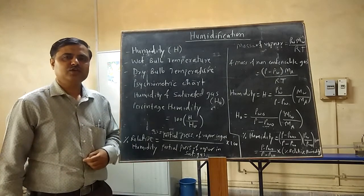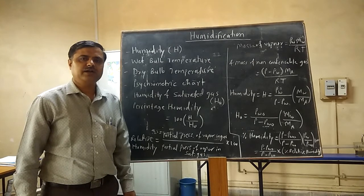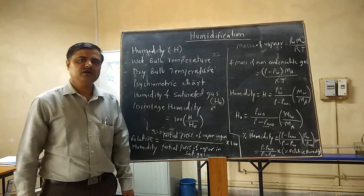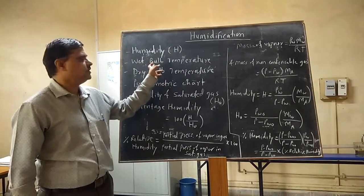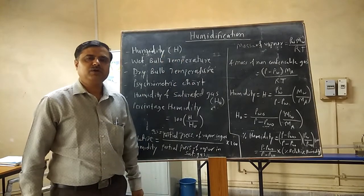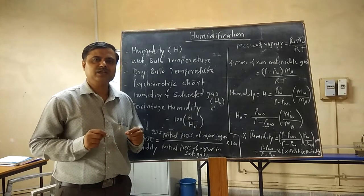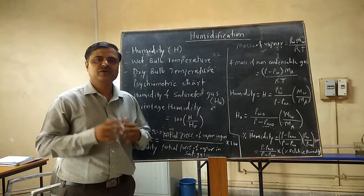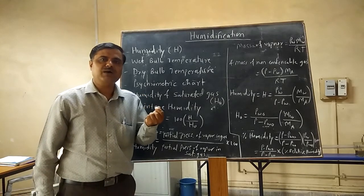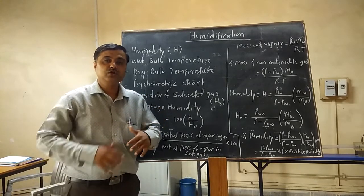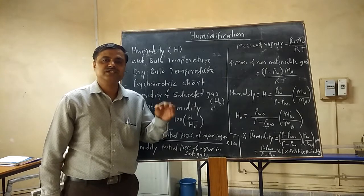How do we measure humidity? We have to measure the wet bulb temperature and the dry bulb temperature. Wet bulb temperature is the steady state temperature when a small amount of liquid is evaporating into a large amount of vapor-gas mixture, under steady state conditions.